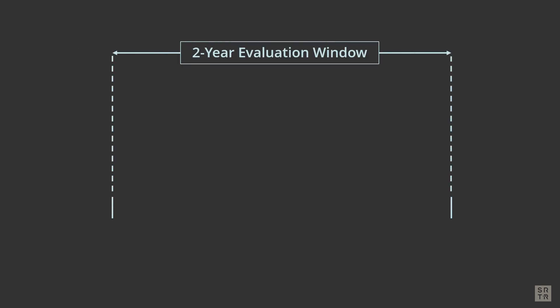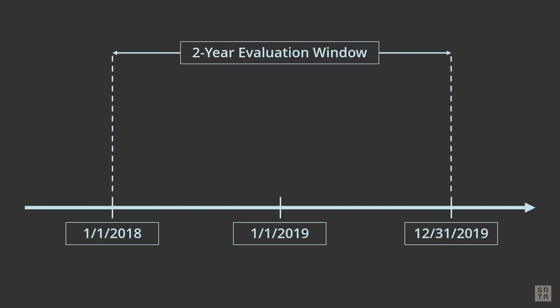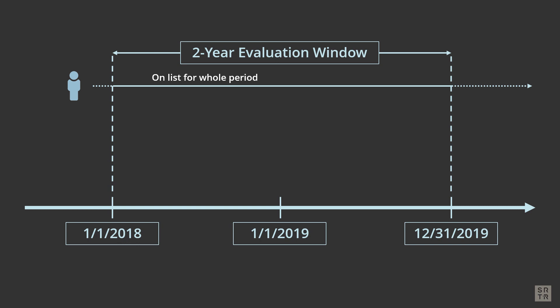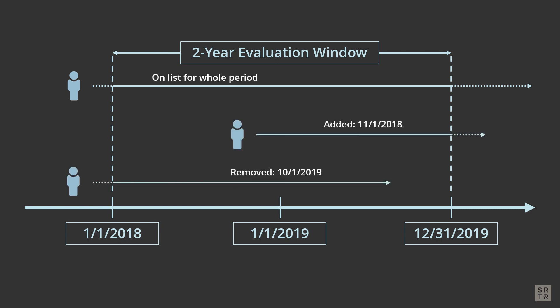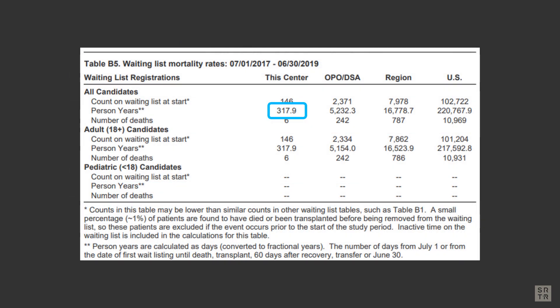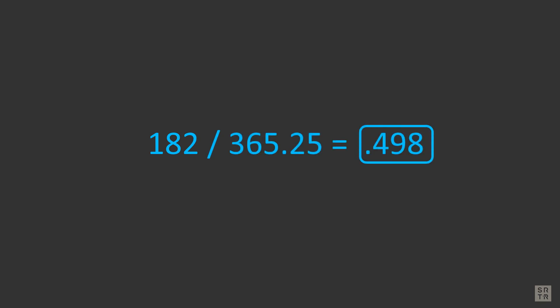SRTR uses a two-year observation period to analyze data on waitlisted patients. Because candidates can be on the list at the beginning of this period, added during the period, and removed for many reasons during or after the period, the time one patient is on the list differs from others. To account for this, SRTR adds all the candidates' time on a program's list together and refers to it as person years. Person years are calculated as the number of days the candidate was observed, then converted to fractional years for each candidate. This number represents the total time all candidates at this program were on the list.